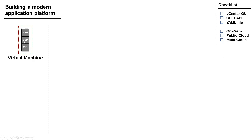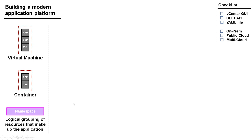When we build this modern application platform, we'll stick to virtual machines and containers as shown before, but I'm going to introduce something new called a namespace — a logical grouping of resources that make up the application. It's a name for grouping together all the resources required to make an application work. This is a good thing for IT because the focus has shifted from infrastructure to applications — we should care more about delivering the application than what makes it up.